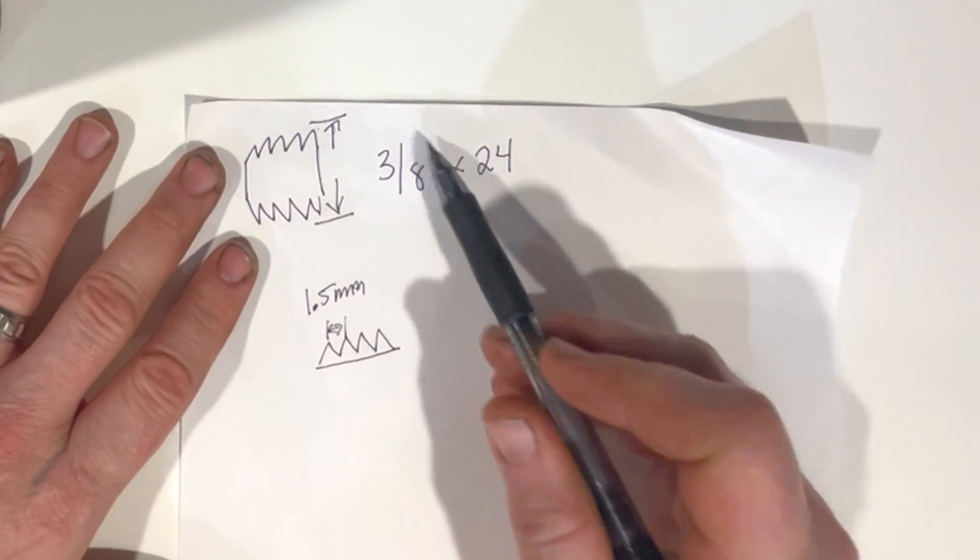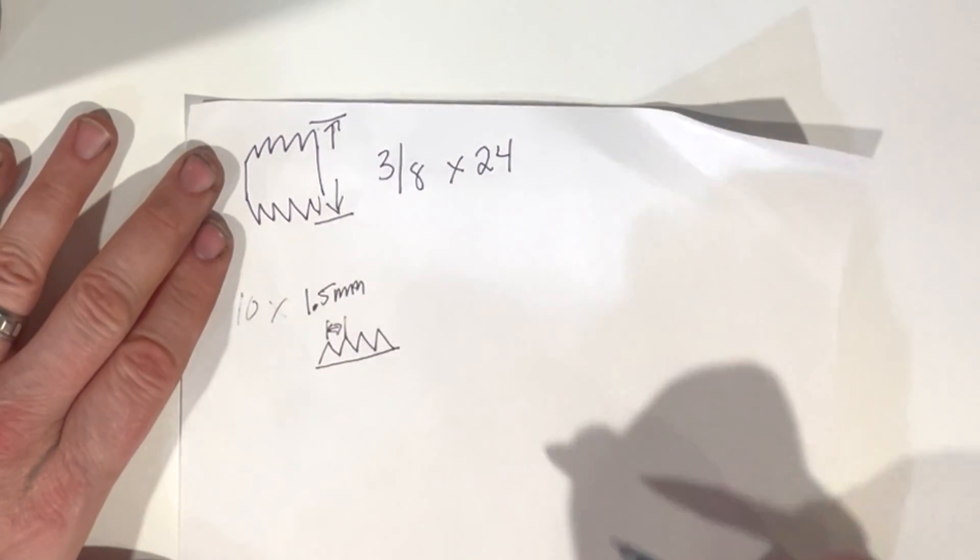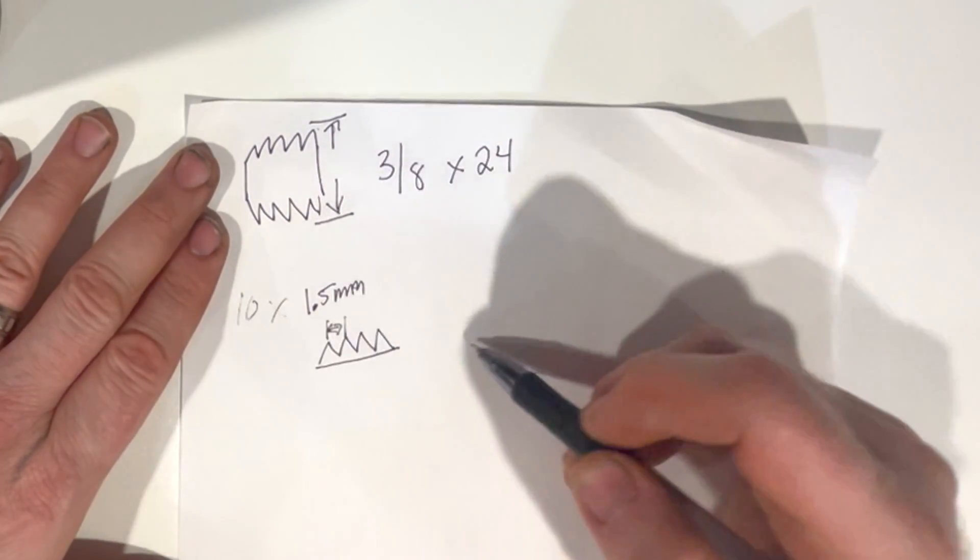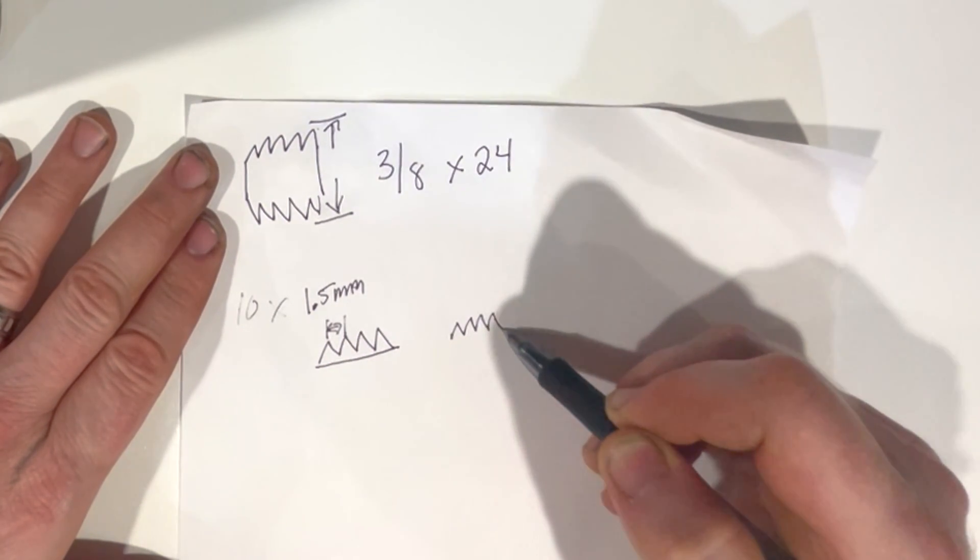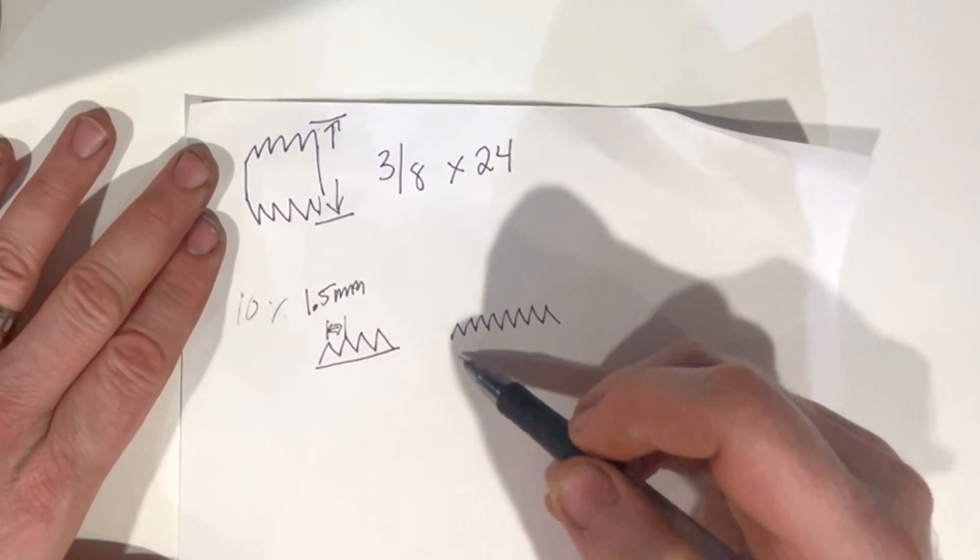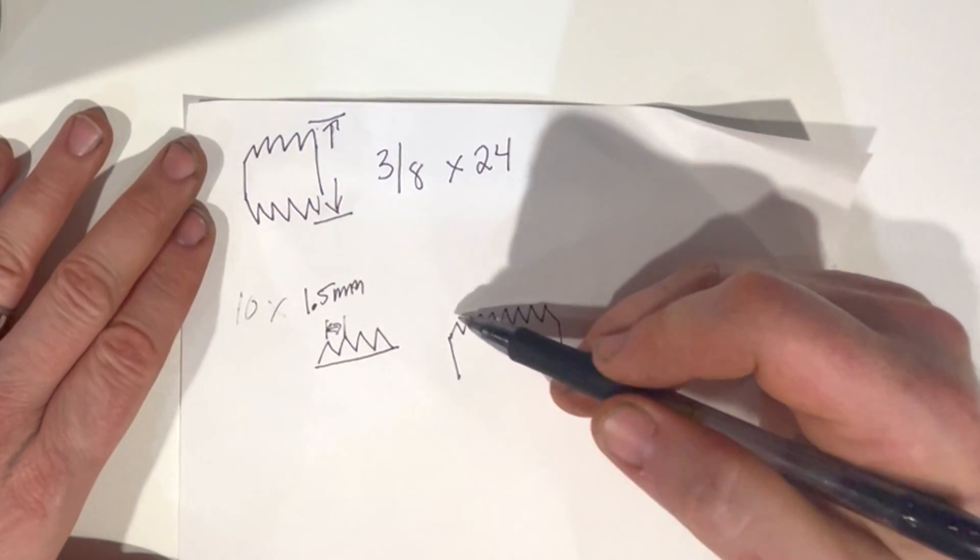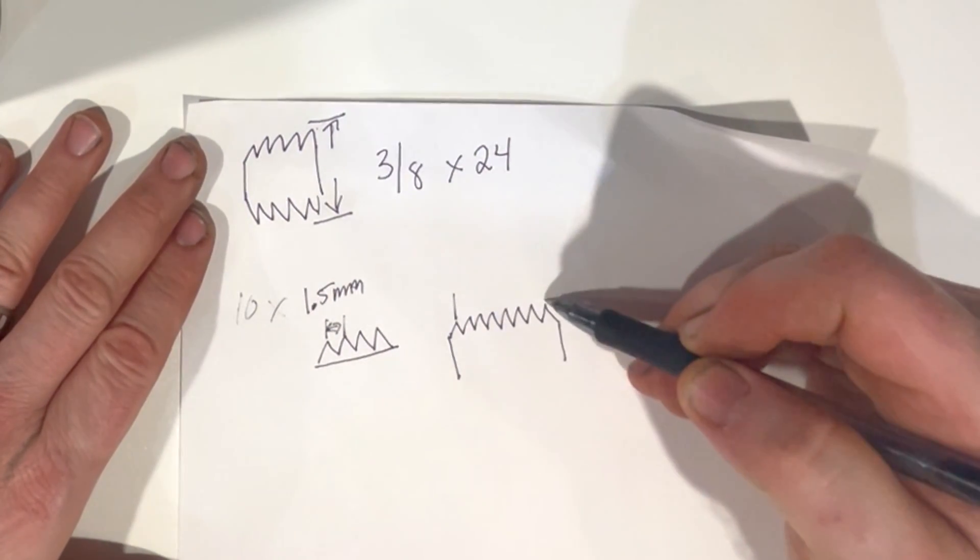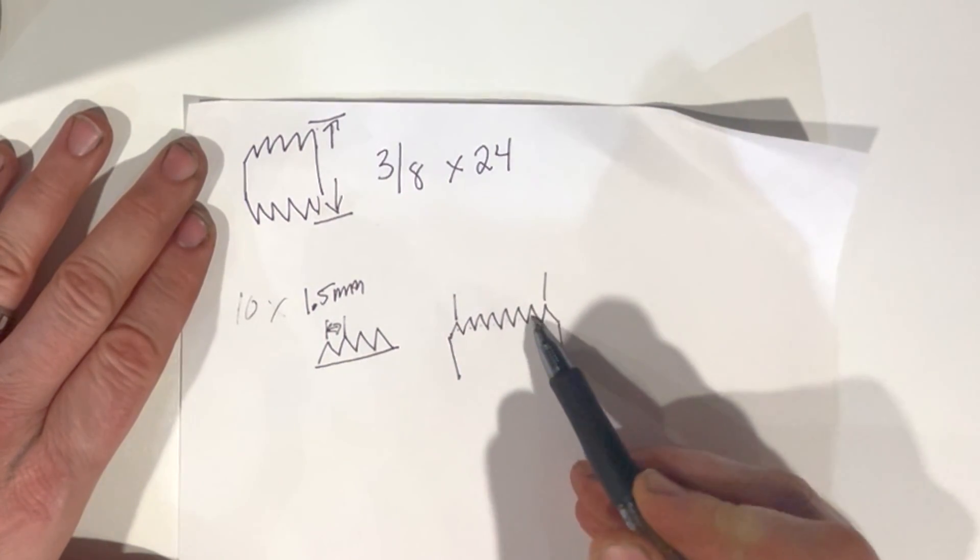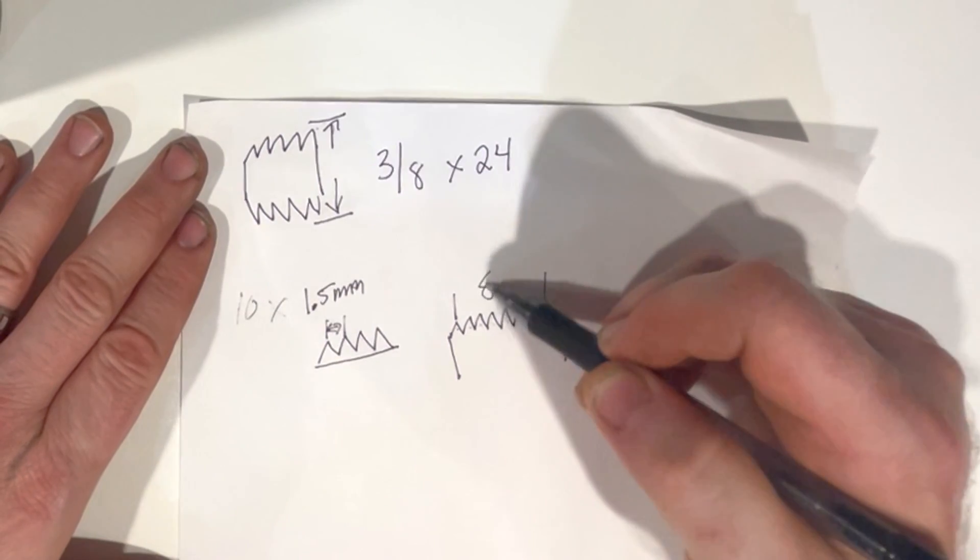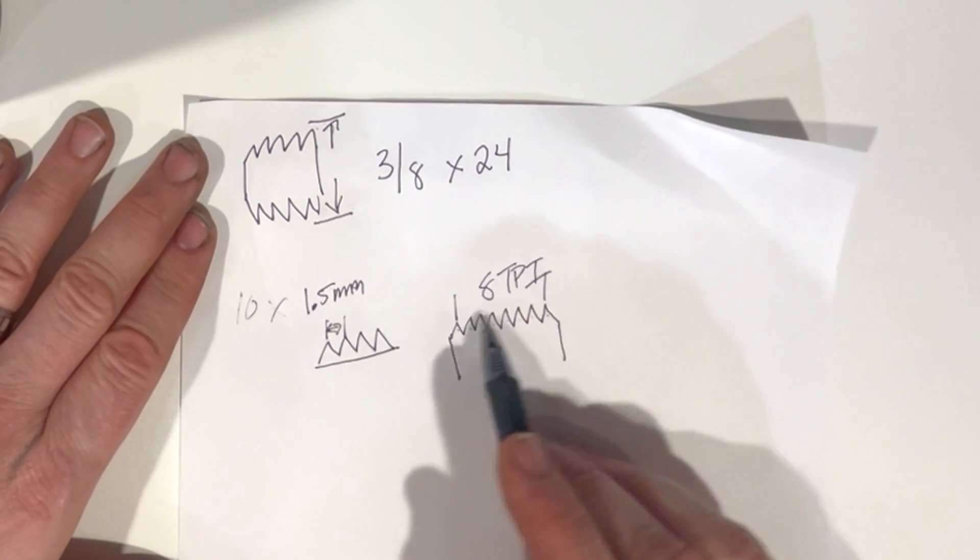Like this would be a 10 by 1.5, and SAE or imperial, it goes by its frequency rather than its wavelength. So let's say this was one inch. We would count one, two, three, four, five, six, seven, eight. This would be eight TPI. That would be its pitch.